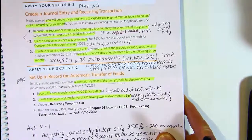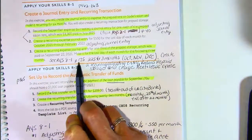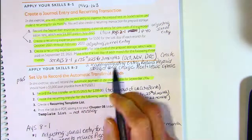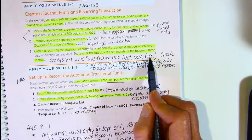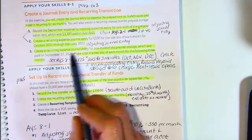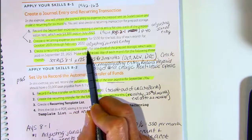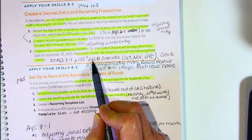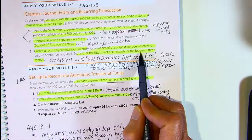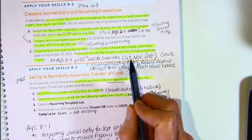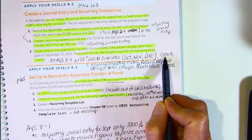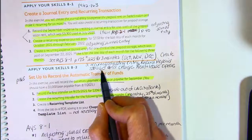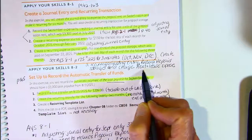In the third step, this is the transaction you just recorded on page 175 in Reinforce Your Skills 8-1, where you paid $225 for three months of storage rent — October, November, and December. They want you to create a recurring expense journal entry for one-third of $225, which is $75, for the last day of each month for those three months: end of October, end of November, end of December. Create a recurring adjusting entry, reduce Prepaid Storage, and charge Rent and Lease Expense.